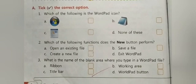Number three: what is the name of the blank area where you type in a WordPad file? A: Ribbon, B: Working area, C: Title bar, D: WordPad button. So the right answer is B, working area. In front of B you will put a tick mark sign.